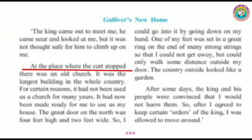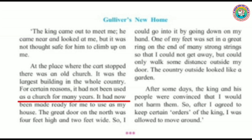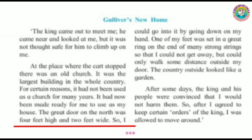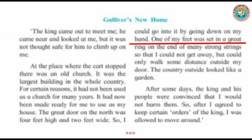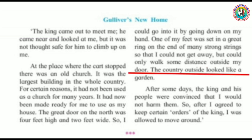At the place where the cart stopped, there was an old church — the largest building in the whole country. For certain reasons, it had not been used as a church for many years. It had now been made ready for Gulliver to use as his house. The great door on the north was four feet high and two feet wide, so he could enter only by going down on his hands. One of his feet was fastened in a great ring on the end of many strong strings, so that he could not get away but could only walk some distance outside his door. The country outside looked like a garden.